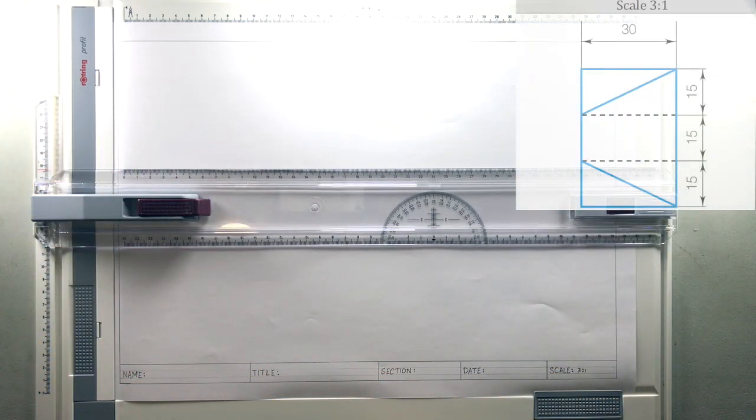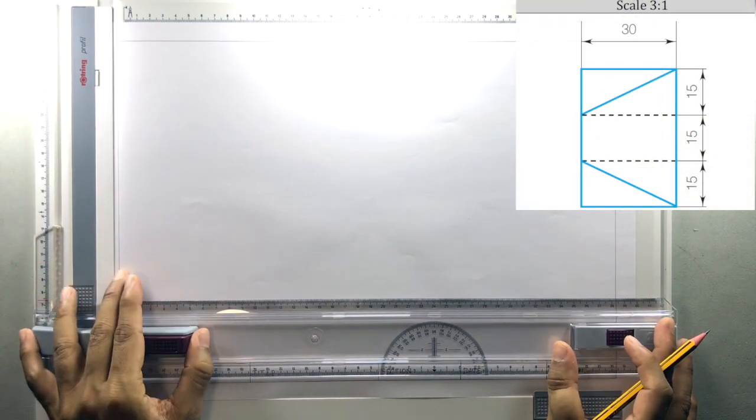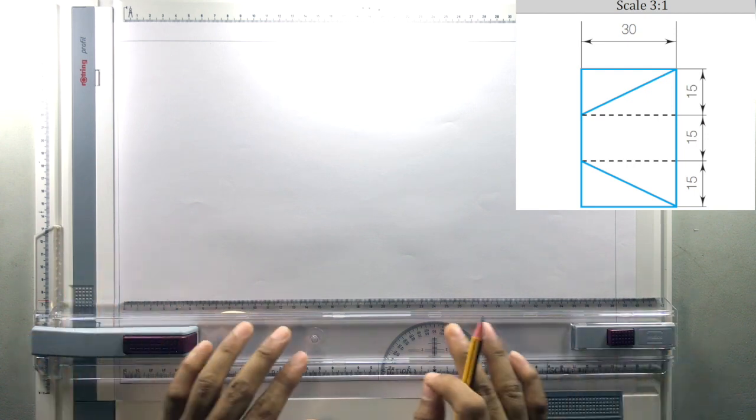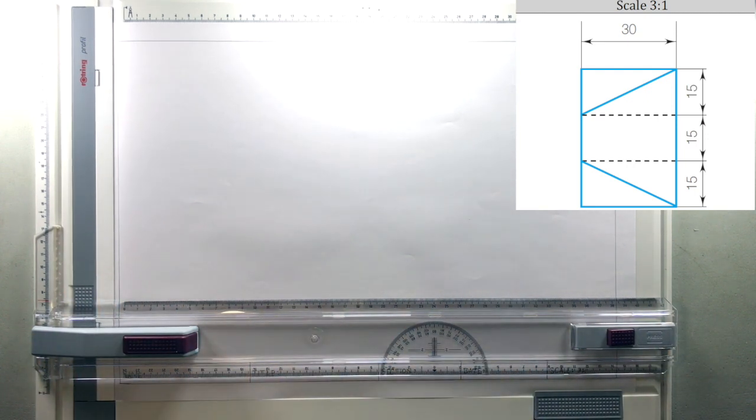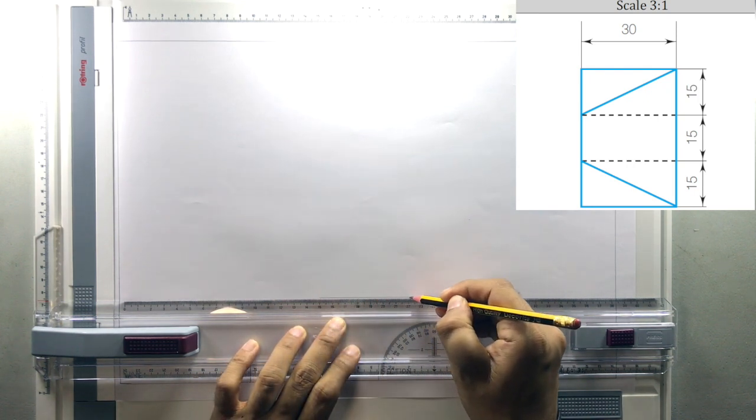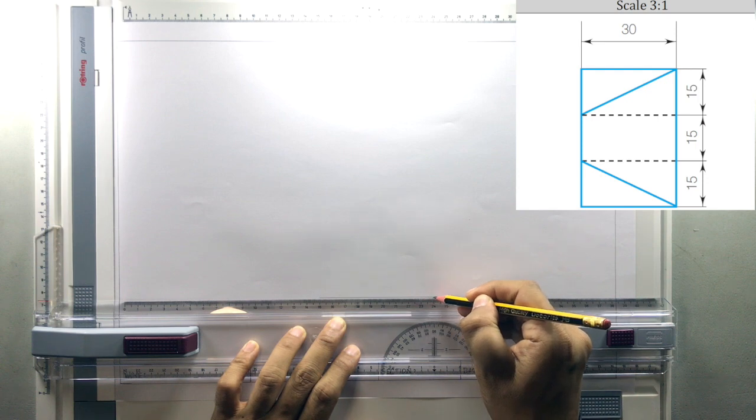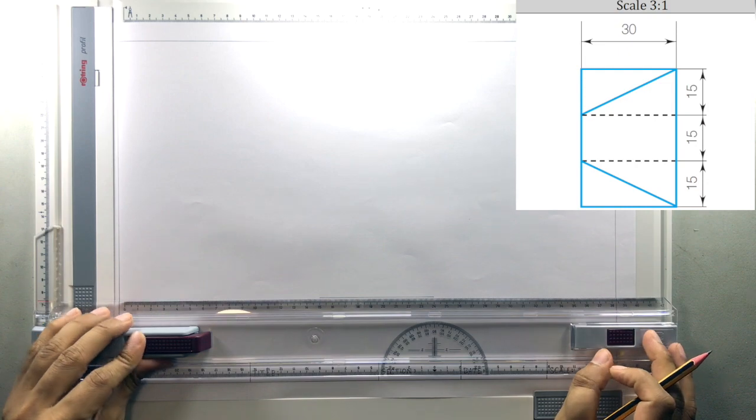The horizontal line is where I will be starting. So let me first draw the horizontal lines. I will lock it, and then the horizontal line has to be 90 millimeters. So I will draw it 90 millimeters from here. Okay, that's 90 millimeters.